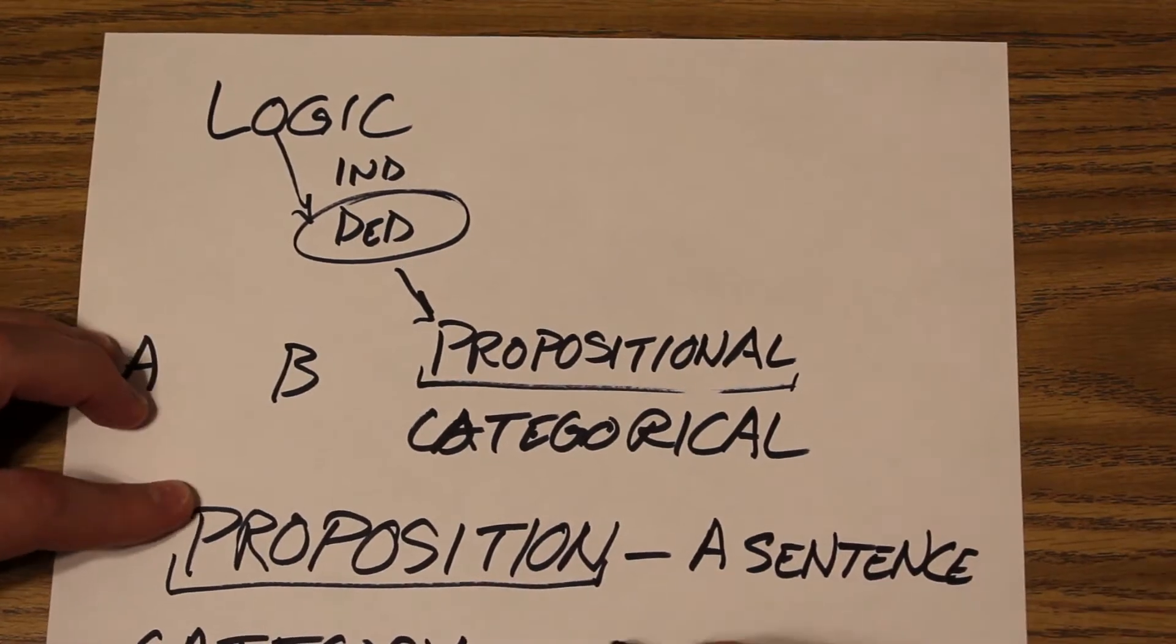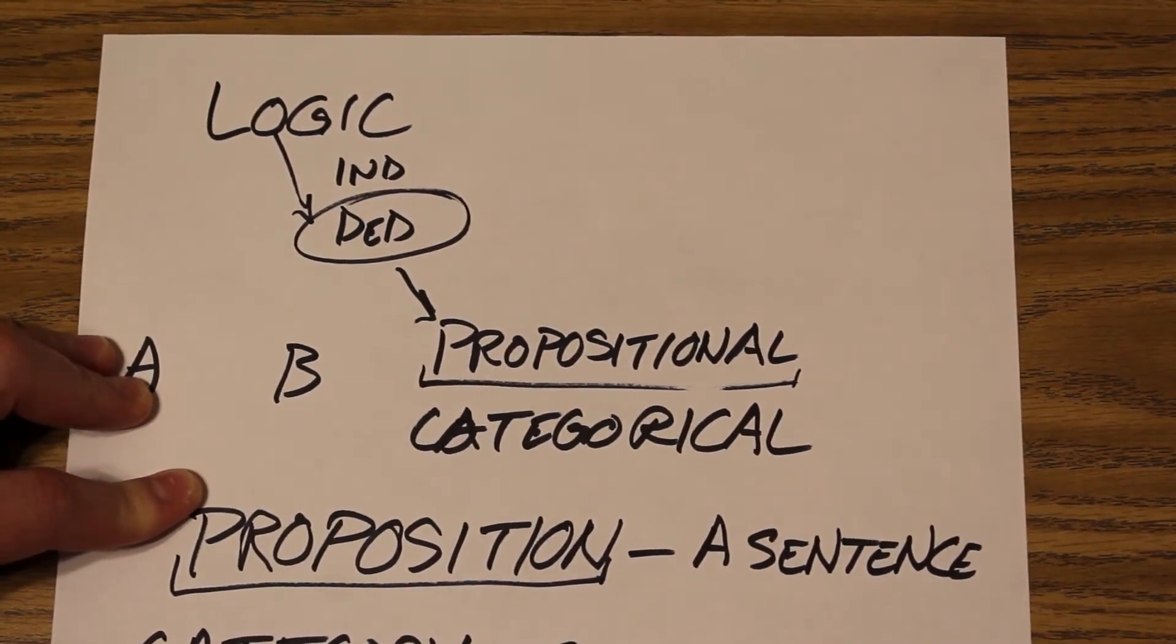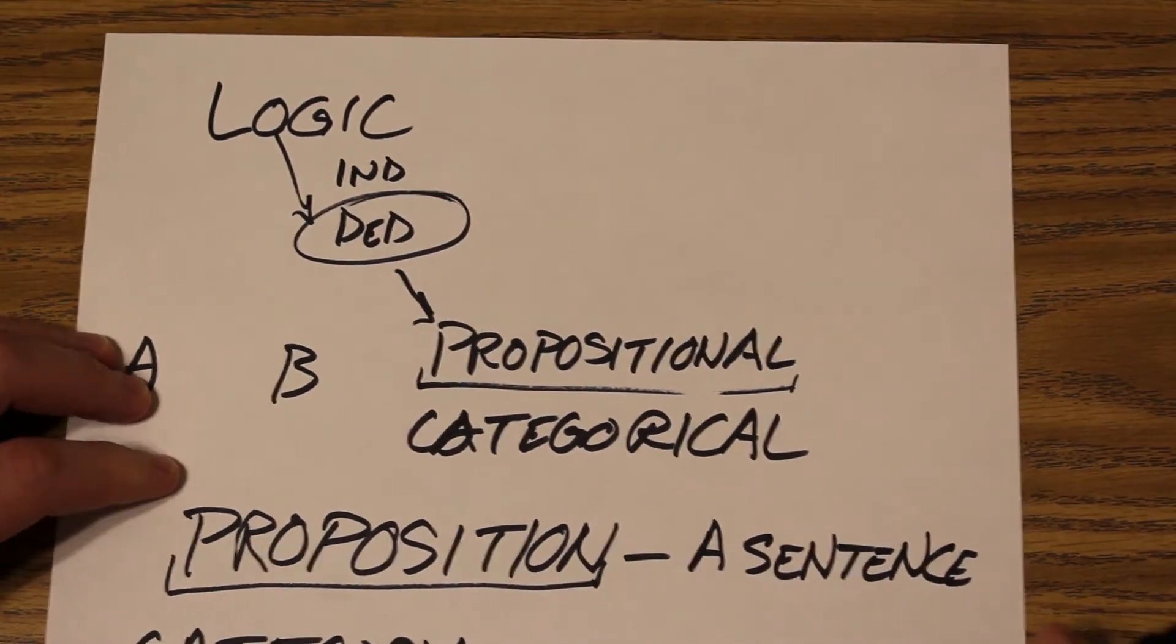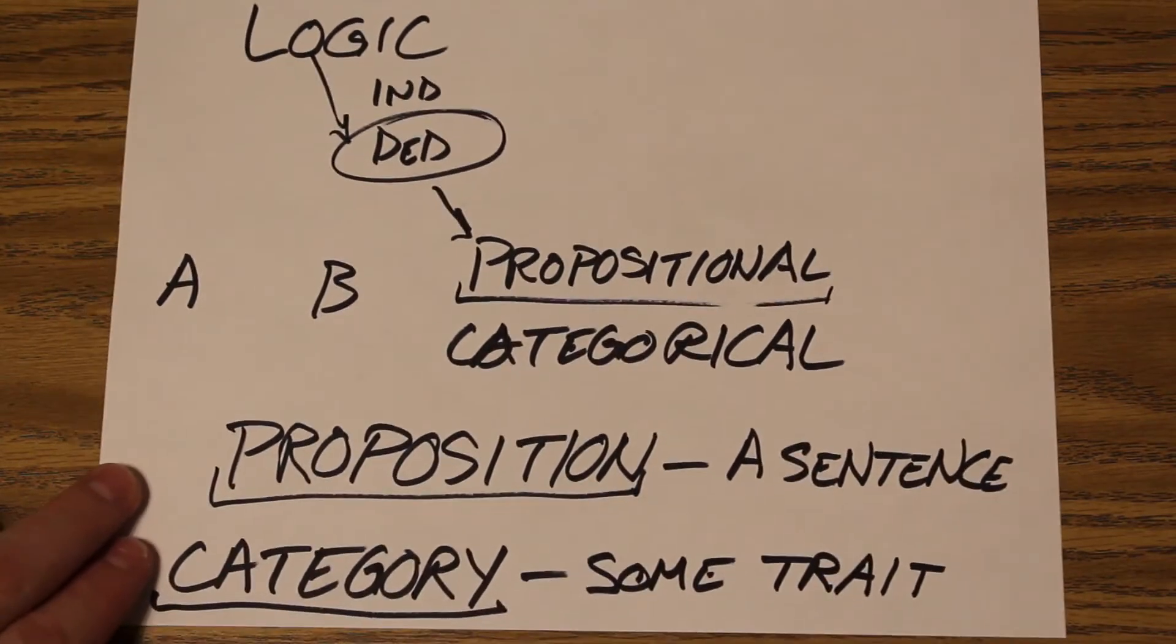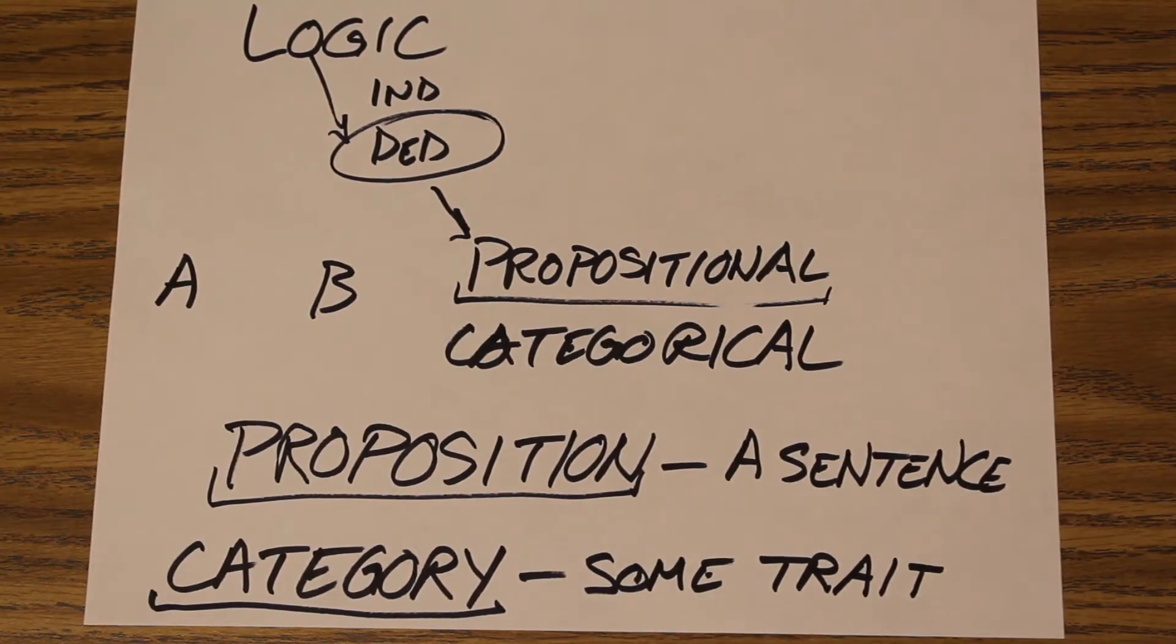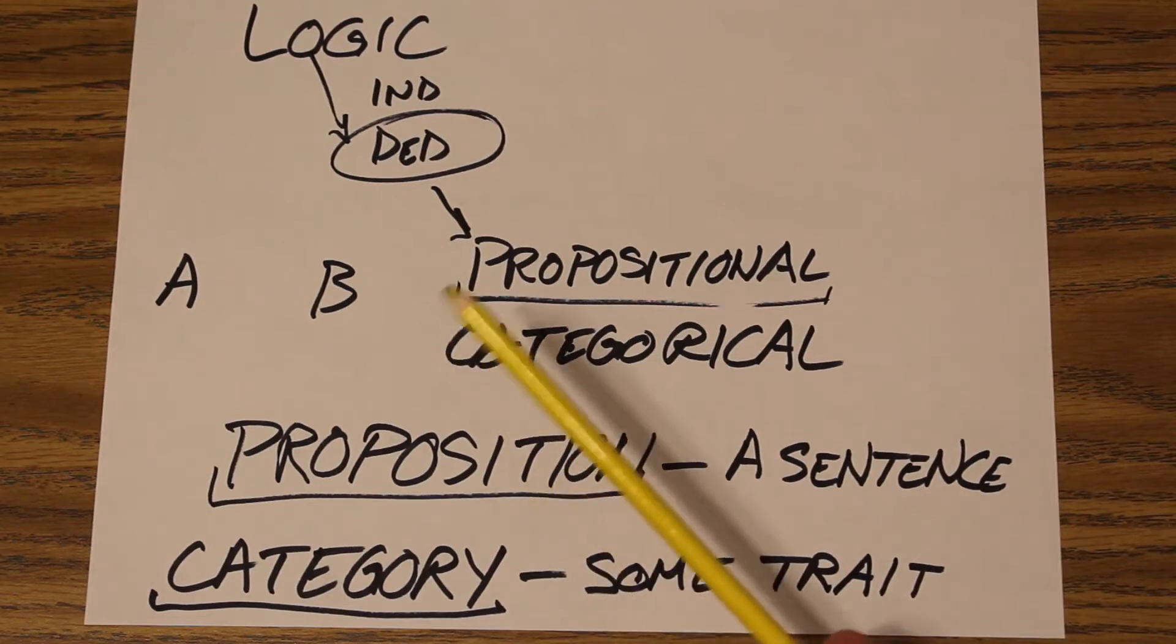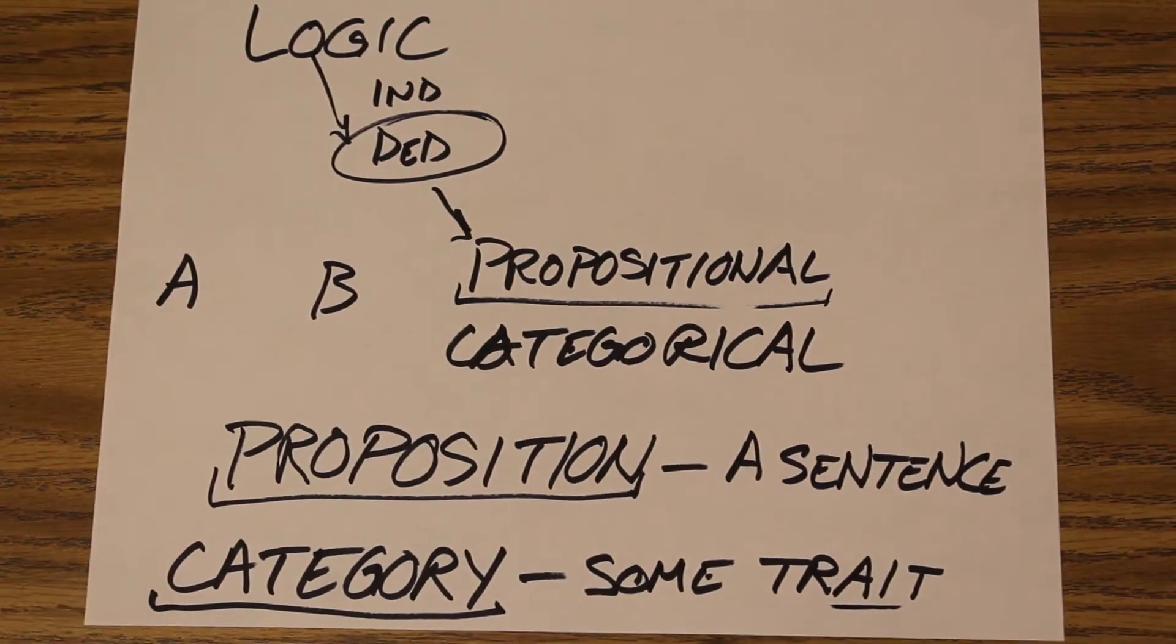And again, this is just an oversimplification. It's just some trait. One second here. Let me fix this. So you have a sentence and you have some trait. These are different. You could have a category which is yellow. What's yellow? Bananas, pencils, lemons, whatever. That would be a category. It's not a standalone sentence to say yellow.